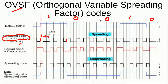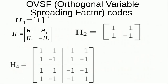The same is the case with the other data bits — each one is being multiplied by the same spreading code with a spreading factor of eight, and then they are being de-spread at the receiver. Because these signals increase the bandwidth of the original user data rate, we call them spreading codes. At the receiver they are again de-spread to the original frequency bandwidth.